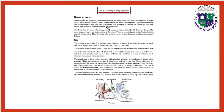Sense organs are specially developed parts of the body which can detect stimuli such as light, sound, taste, touch, and smell. Such sense organs are made up of sensory cells. A particular sensory cell can respond to only one kind of stimulus.